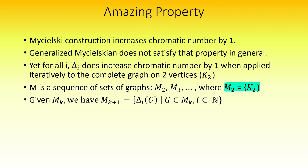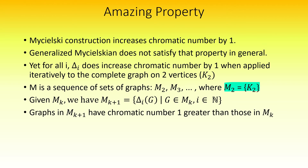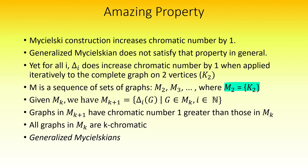In other words, to generate the next set of graphs in the sequence, take any cone over any graph in the previous set. Amazingly, the property of increasing chromatic number holds for this sequence of sets of graphs. With that fact, it has been proven that every graph in m sub k has chromatic number k. We call the graphs we find in this sequence the generalized Michelskians.